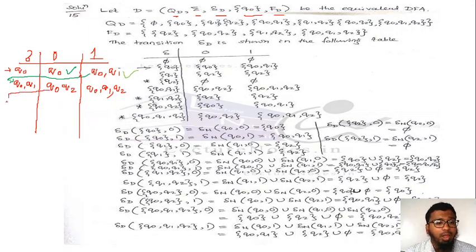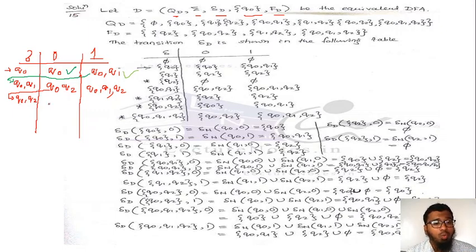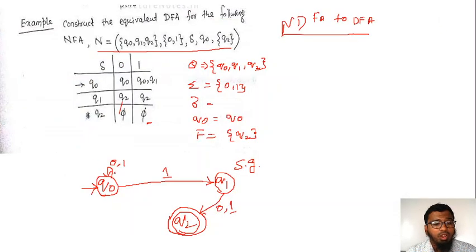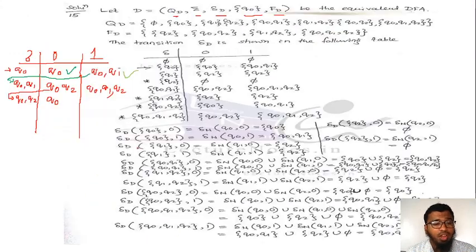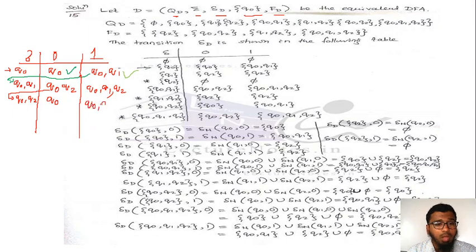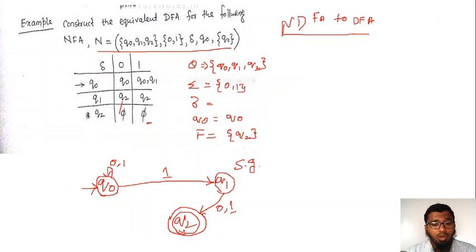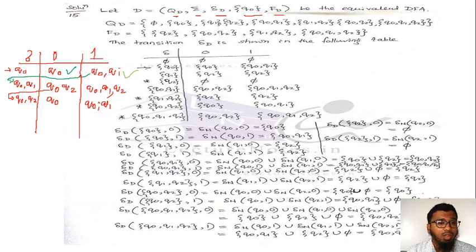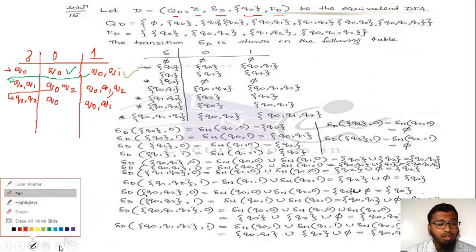Now take the new state {q0, q2}. For {q0, q2} on 0: q0 on 0 gives q0, and q2 on 0 gives nothing — so we get {q0}. For {q0, q2} on 1: q0 on 1 gives {q0, q1}, and q2 on 1 gives nothing — so we get {q0, q1}.